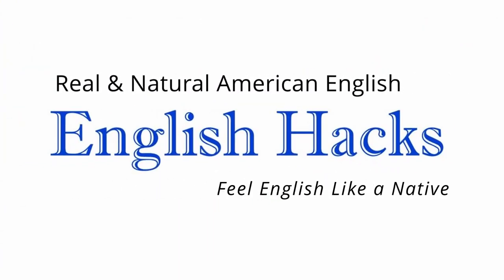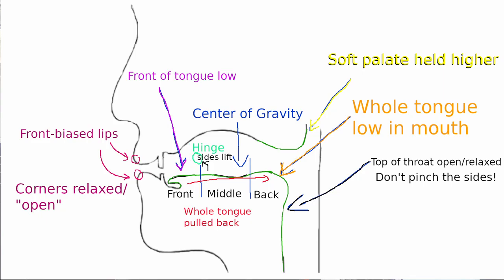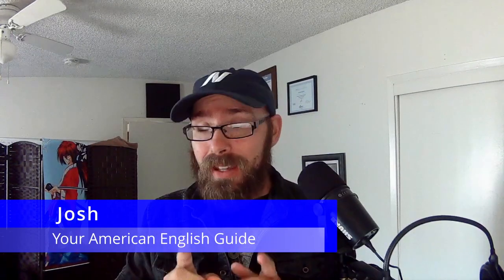In today's lesson, we're talking about the map of American English mouth posture. Now this looks messy, but don't worry. We'll be covering every point and how this affects every sound in the language. Note that this image is approximate, but it is based on research and how things feel in my mouth as a native speaker.